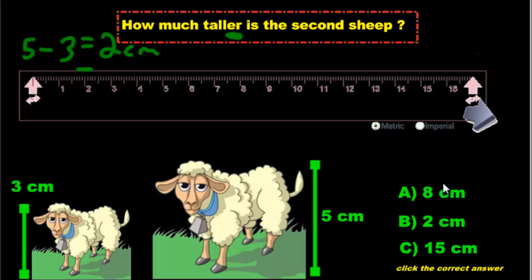5 take away 3 is going to be 2 centimeters. So you're going to ignore this one because you're not going to add them. You're not going to go 3 plus 5. That would be the sum. That's not sum. That's taller. This is an ER word. It means take away. It's not going to be 15. You're not going to time.